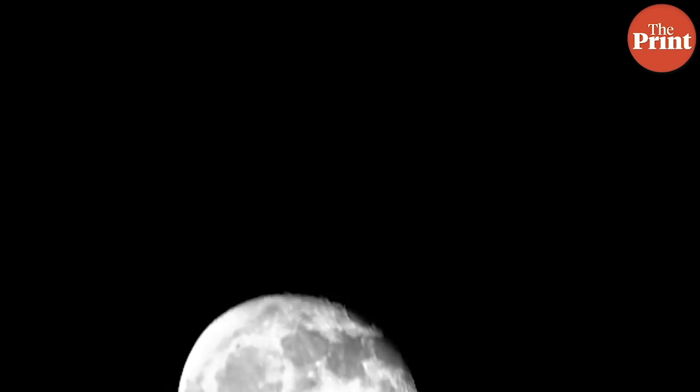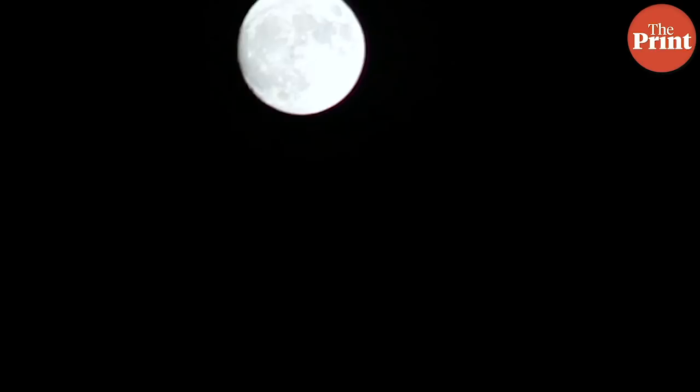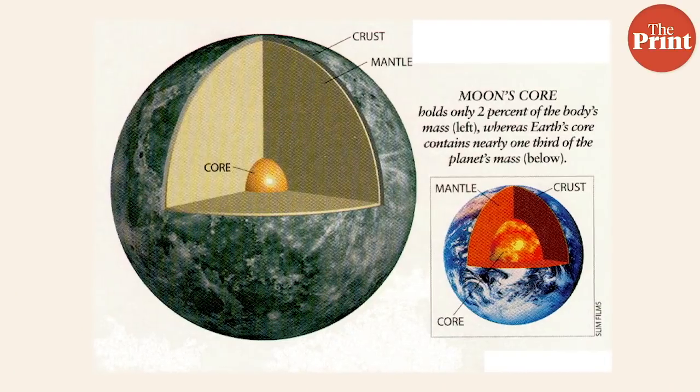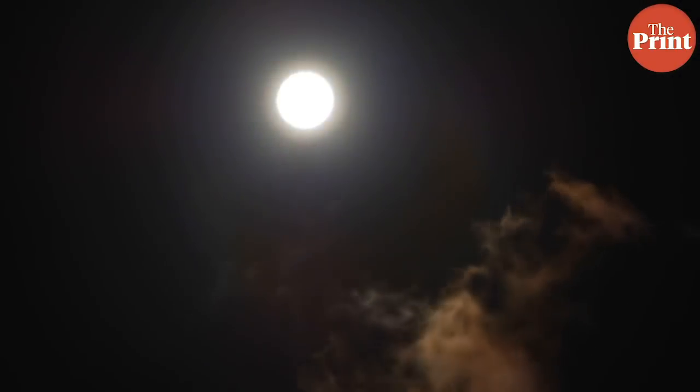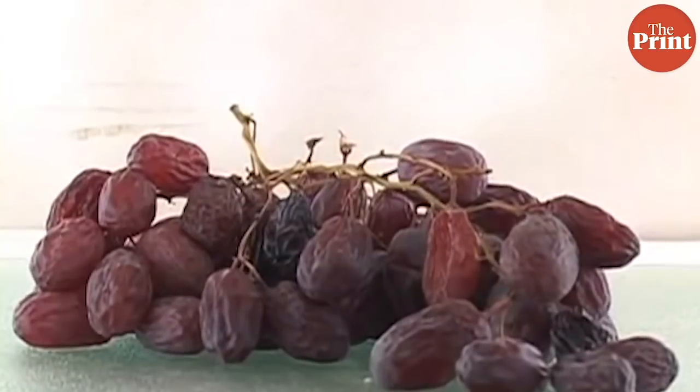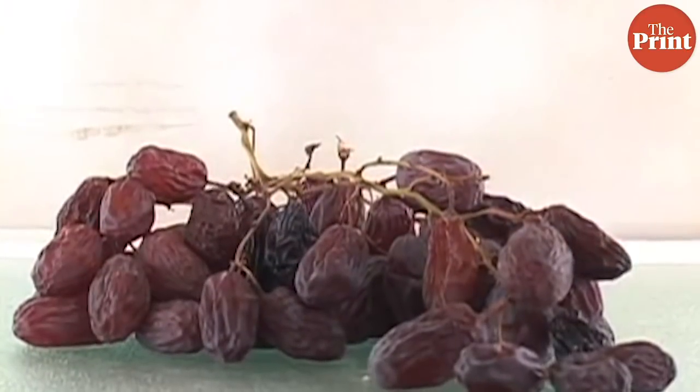To better understand these moonquakes, we need to remember two things we already know about the moon. The first is that the moon is shrinking. When the moon formed, it was hot, just like any other body. The moon also has a core, a mantle, and a crust, just like the Earth. However, the moon's small size meant that the core started losing heat very rapidly. The core makes up just 20% of the moon's volume, unlike 50% on Earth. It continues to cool even today, and as it cools, it shrinks — much like a raisin — and its structure starts to develop deformities.